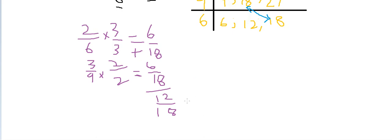To simplify, we need to find the greatest common factor. The greatest common factor for both of these numbers is 6.